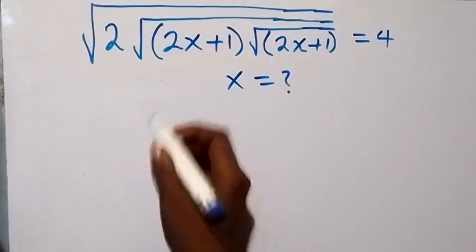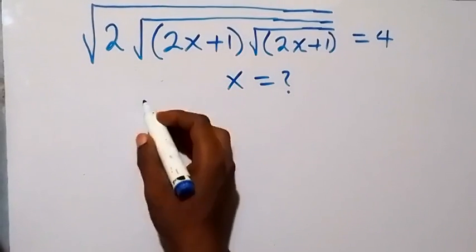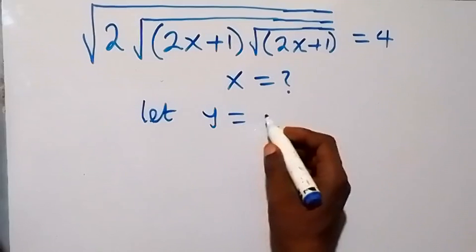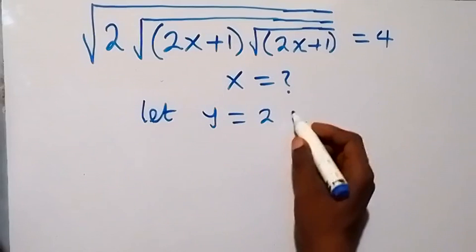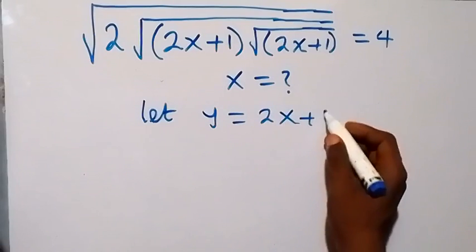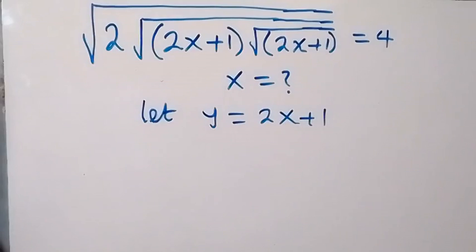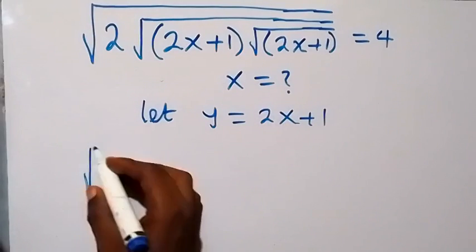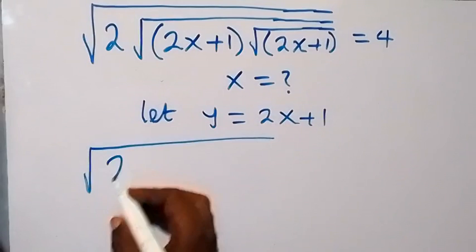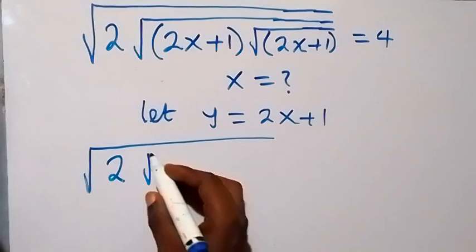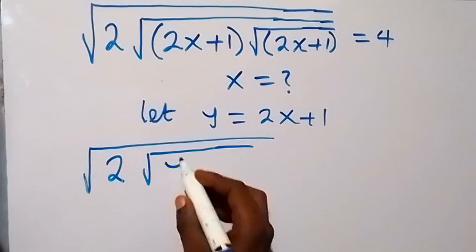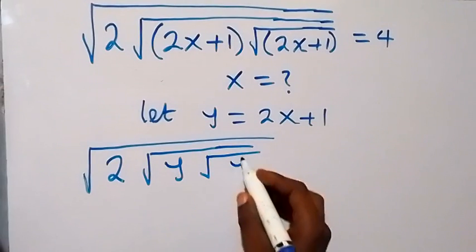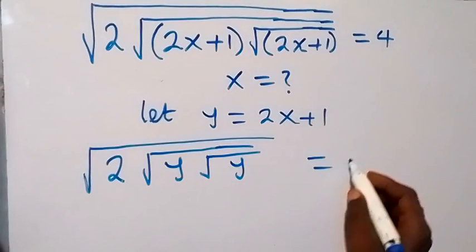From here, let's represent 2x plus 1 with a letter and say: let y be equals to 2x plus 1. Then we can rewrite this and it will become square root of 2, then square root of y, also inside that we have square root of y, which is now equals to 4.